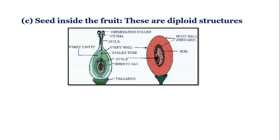Once fertilization is complete, the ovary ripens to form the fruit. So you see all the structures here are diploid.